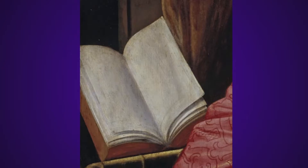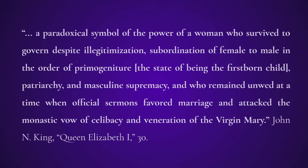Elizabeth became queen in 1558 at age 25, following the death of both her siblings, who were heirs to the throne. Author John N. King wrote in his article entitled 'Queen Elizabeth I: Representations of the Virgin Queen,' how despite Elizabeth's vows to a life of perpetual virginity, she actually entered into a symbolic marriage with England as her husband. King notes how her maidenly chastity is not to be interpreted as a sign of political or social deficiency; it is rather a paradoxical symbol of the power of a woman who survived to govern despite illegitimization, subordination of female to male in order of primogeniture, patriarchy and masculine supremacy, and who remained unwed at a time when official sermons favored marriage. As we can see, in a time of extreme oppression of women, Elizabeth defied all odds in a way that has never been seen before.